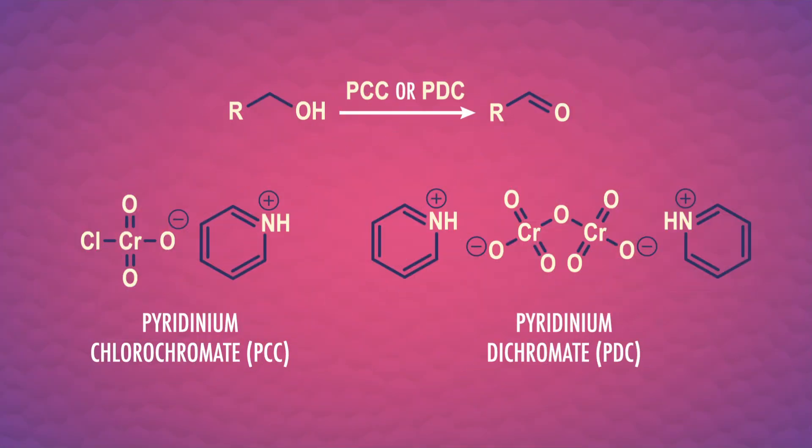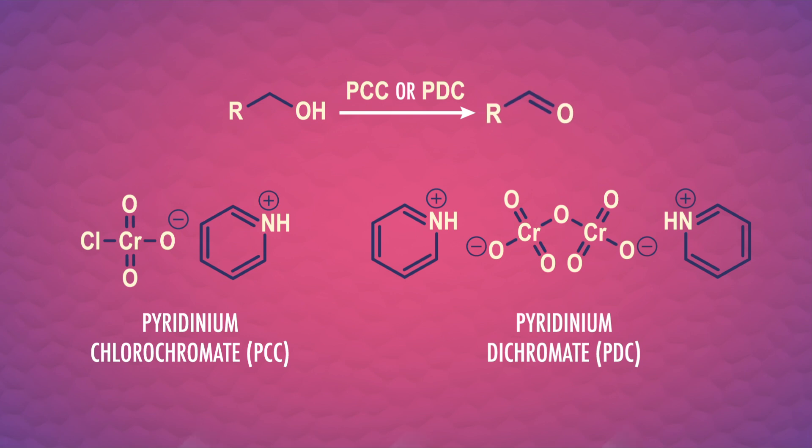But what if you've got a primary alcohol you don't want to oxidize all the way to a carboxylic acid? This is where weaker oxidizing agents come in. Instead of the very strong chromic acid, we can use something milder like pyridinium chlorochromate and pyridinium dichromate to stop at an aldehyde. The downside of all these chromium-containing oxidizing reagents is that chromium compounds like chromic acid and dichromate salts are toxic, carcinogenic, and corrosive. But there are safer mild oxidants that can be used instead, such as Dess-Martin periodinane, or DMP.